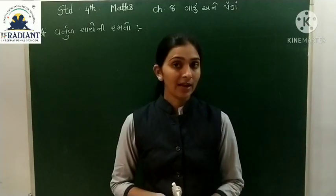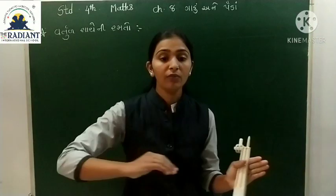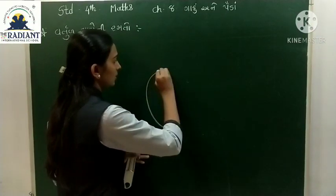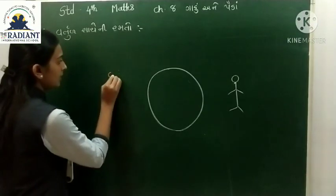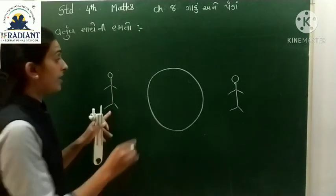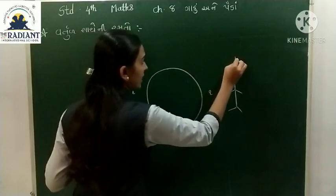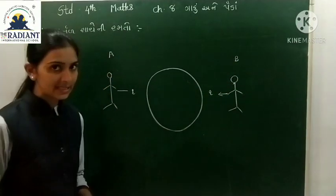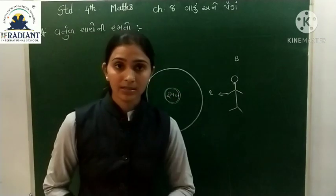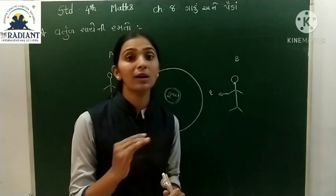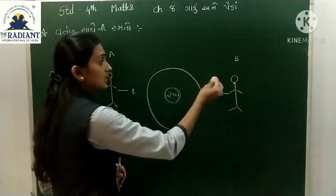આ સિવાય આપણે બીજી એક રમત - આપણે બે ટીમ પાડીએ છે. બે ટીમ - એ ટીમ અને બી ટીમ. વચ્ચે સરસ મઝાનો સર્કલ વર્તુળ બનાવીએ છે. ગોળ એ ટીમ બીડાબર અને ગોળ બી ટીમ. ત્યારે રૂમાળ, અને ઉપર મ્યુઝિક વાગ્તું હોય છે.